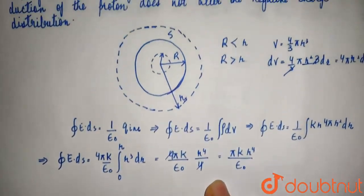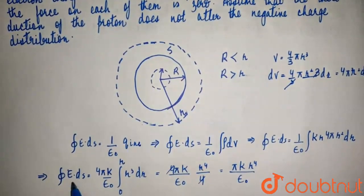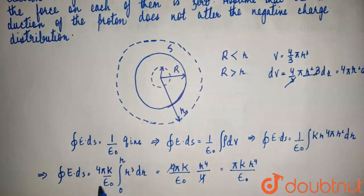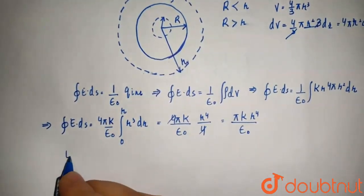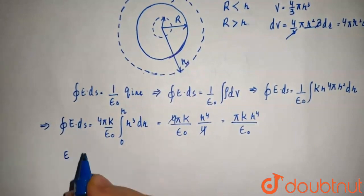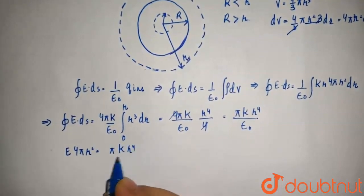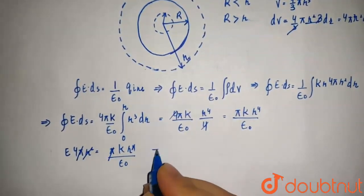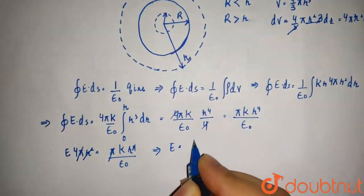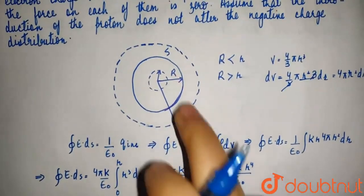Since the electric field is radially outward and the surface element dS is also in that direction, the angle between them is 0, so E dot dS equals E dS cos 0 equals E dS. Therefore E times 4 pi r squared equals pi k r to the power 4 over epsilon naught. This gives us E equals k r squared over 4 epsilon naught for this inner sphere.